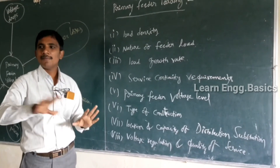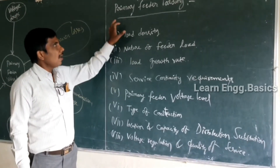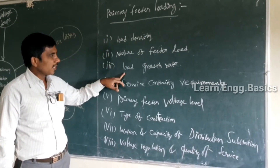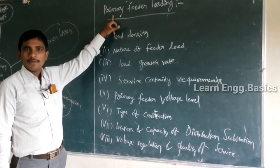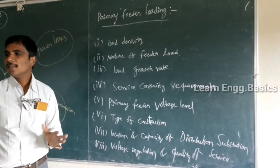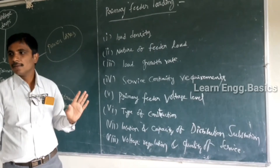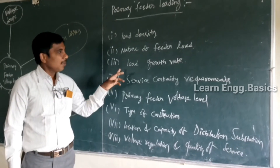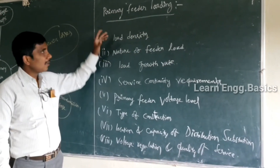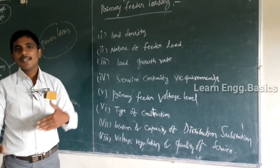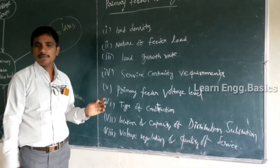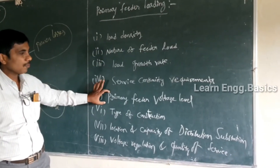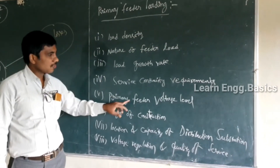The load growth rate also helps decide how to determine primary feeder current and primary feeder voltage level. The number of distribution transformer locations is also one of the factors that depends on primary feeder loading.